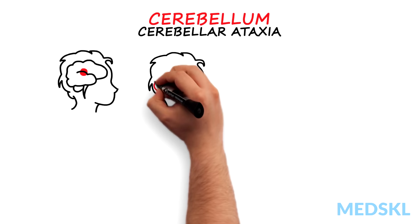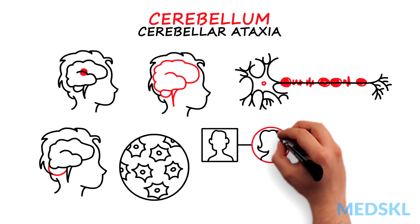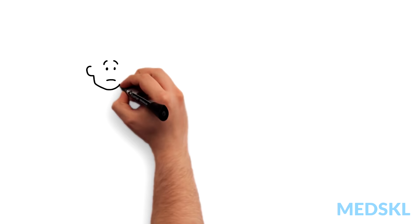Cerebellar ataxia can result from vascular lesions such as stroke or hemorrhage, inflammation, demyelination, tumours, infections, hereditary disorders, or drugs and alcohol.